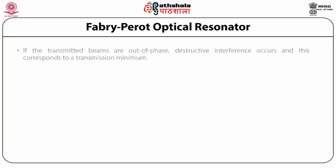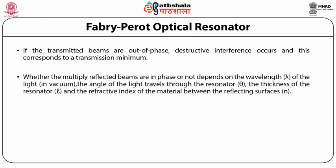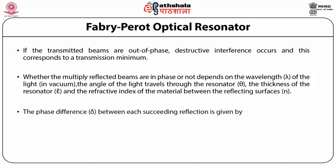Constructive interference occurs if the transmitted beams are in phase, corresponding to a high transmission peak of the resonator. If the transmitted beams are out of phase, destructive interference occurs, corresponding to a transmission minimum. Whether the multiply reflected beams are in phase depends on the wavelength of light in vacuum, the angle theta at which light travels through the resonator, the thickness L of the resonator, and the refractive index of the material between the reflecting surfaces. The phase difference between each succeeding reflection is given by delta = (2π/λ) × 2nL cos θ.